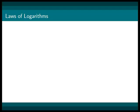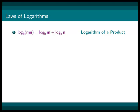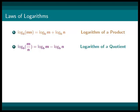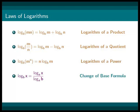Whenever the quantities are defined, we have the following laws of logarithms. Log base b of m times n equals log base b of m plus log base b of n — the logarithm of a product. Log base b of m over n equals log base b of m minus log base b of n — the logarithm of a quotient. Log base b of m to the n equals n times log base b of m — the logarithm of a power. Log base b of x equals log base a of x over log base a of b — the change of base formula.